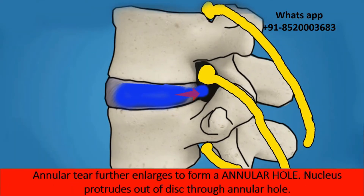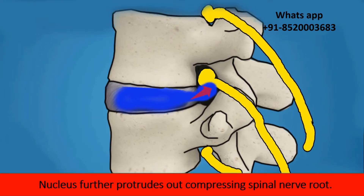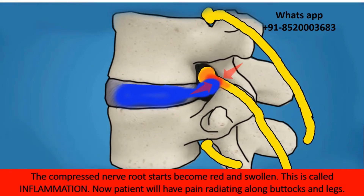The annular fissure further enlarges to form an annular hole, and the nucleus protrudes out through the annular hole. The nucleus protrudes further out, compressing the spinal nerve root. The compressed nerve root starts becoming red and swollen — this is called inflammation.